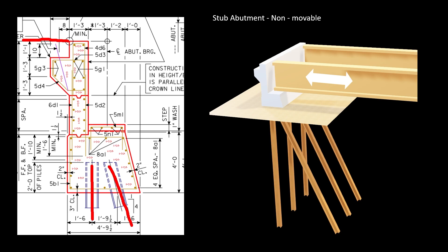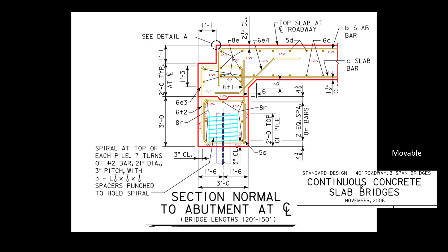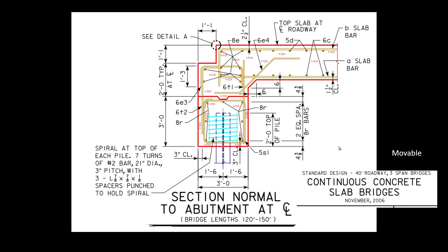The approach pavement comes in and is tied into the stub abutment with a piece of steel. What moves are the beams — the expansion is taken up by an expansion joint on the inside of the stub abutment. So the stub abutment doesn't move; the beams move. There's another kind called a continuous concrete slab bridge — it's one piece, just a thick slab of concrete, all cast together. The approach pavement comes in and this is also a movable abutment: a single pile allows it to move back and forth.